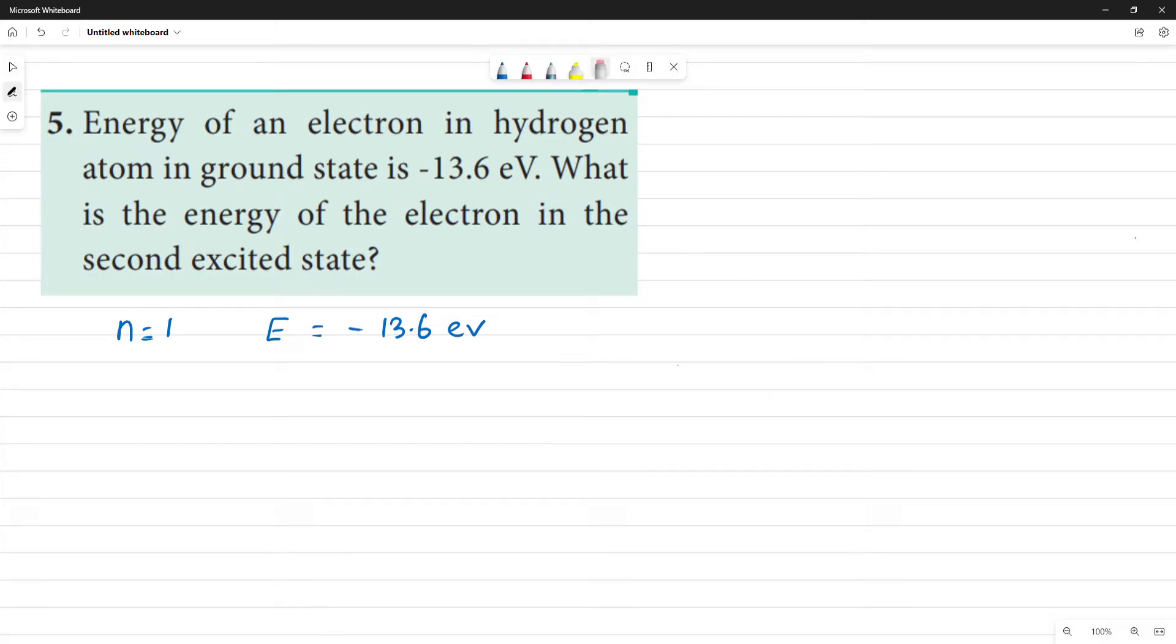Okay, that is, this is n is equal to 1, this is 2, this is 3. So this is n is equal to 1 and this is n is equal to 2 and n is equal to 3.